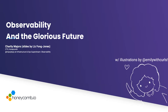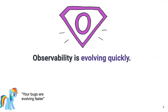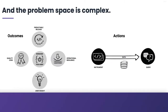Observability — everybody here has probably heard me talk about observability and what it is. Everything's moving very quickly. Your bugs are always going to be moving more quickly than you are. Observability is really the ability to understand our systems without deploying new instrumentation. The problem space is super complex.